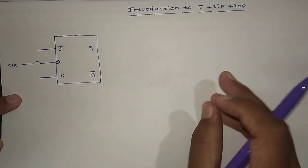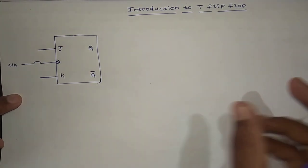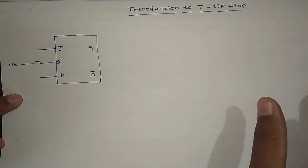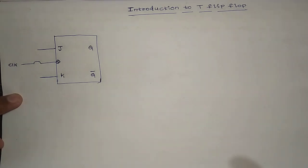S-R flip-flop's disadvantage is when we give 1-1 condition, we have an invalid state. Whereas in D flip-flop, it is only used for memory state. We have input A which is output A, which is known as data flip-flop.